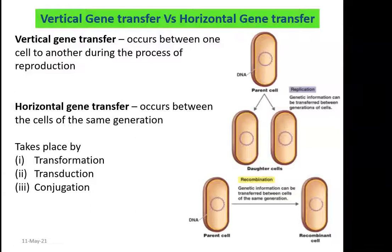In subsequent lectures, we are going to see how transformation takes place in bacterial cells, and we are going to go into detail about the Griffith experiment. The next is the transduction phenomenon. Transduction is effected by viruses — that is bacteriophages, viruses that infect bacteria. The third one is conjugation.